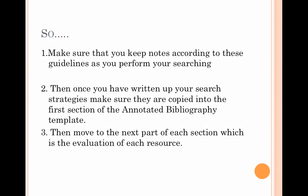As you're searching — whether on the library catalogue, Google, or the ABS — keep notes. Write down what keywords you started with, and if you change them write that down. If you change the date range or the type of resource you're looking for, write that down too. This will help you write up your search strategies in the order you undertook them and put that into the first section of the template, before moving on to fully evaluating the resource in the last part of the annotated bibliography template.